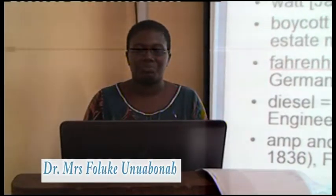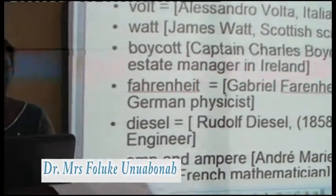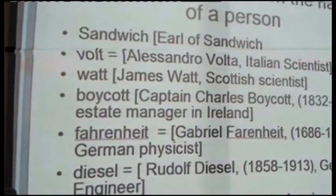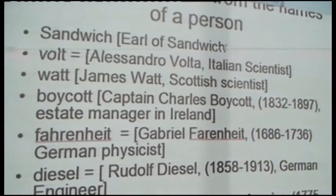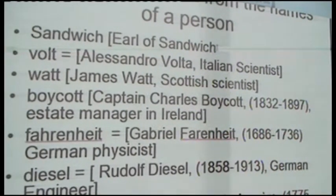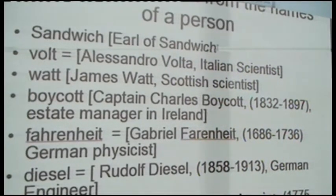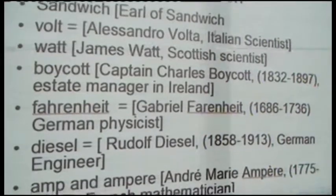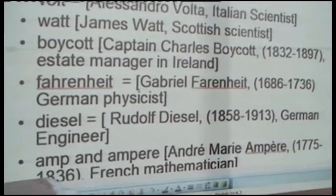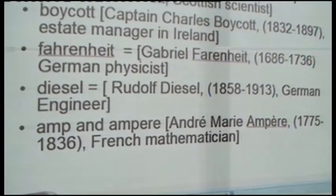We can also talk about coinages from people's personal names. For example, the word 'sandwich' comes from the Earl of Sandwich in the 17th century, who loved to play games while having his food between slices of bread. In the sciences, we have items such as 'volts,' 'watts,' 'boycott,' 'Fahrenheit,' 'diesel,' and so on, taken from the names of people who invented or discovered those particular objects.